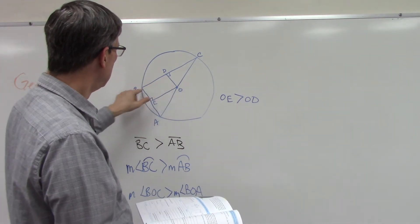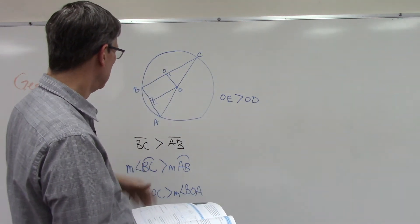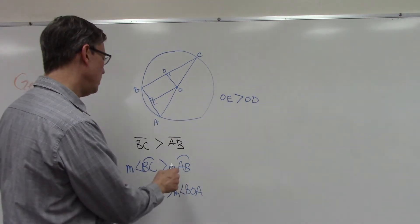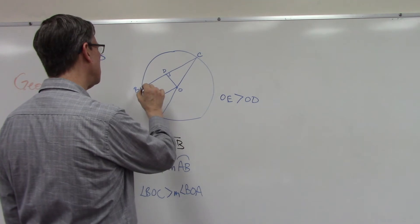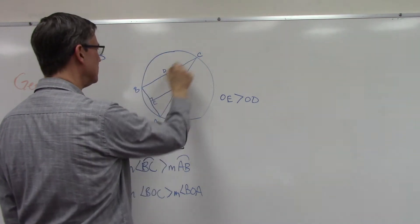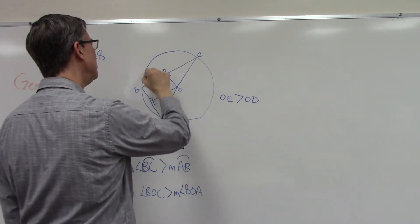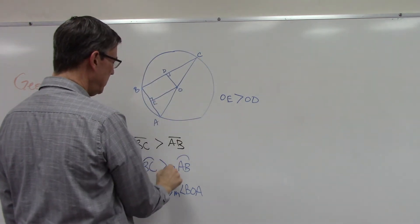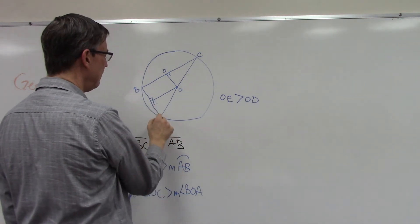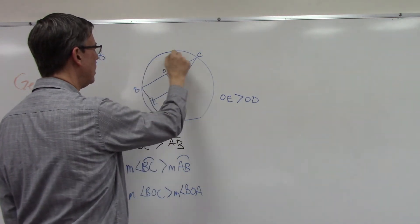There's another one that says if chord BC is longer, then this arc must also be larger than the arc defined by this chord.